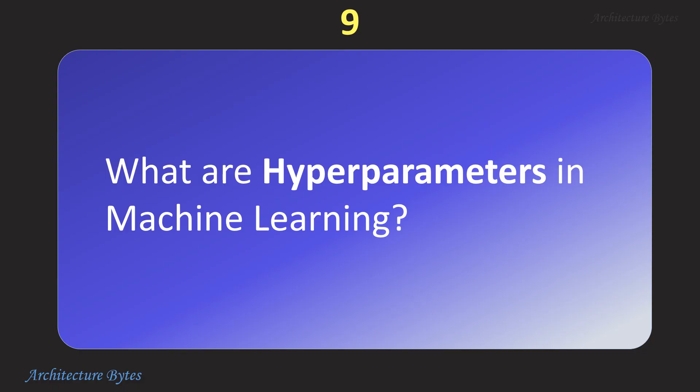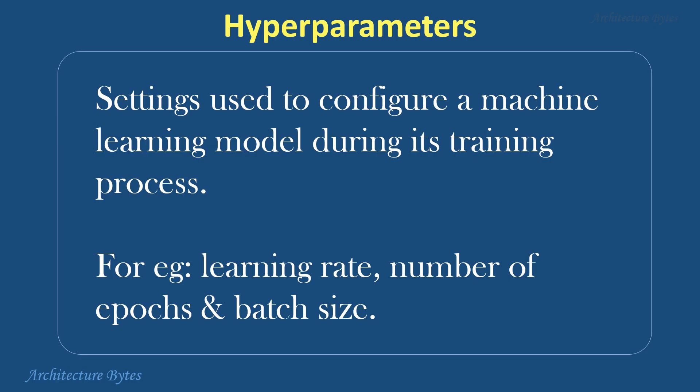What are hyperparameters in machine learning? Hyperparameters are settings used to configure a machine learning model during its training process. Examples include learning rate, number of epochs, and batch size.